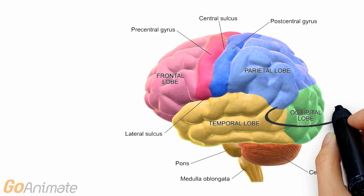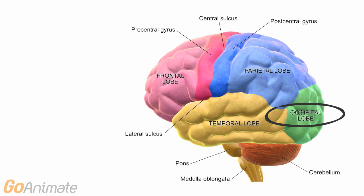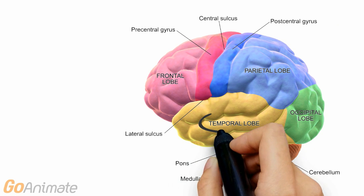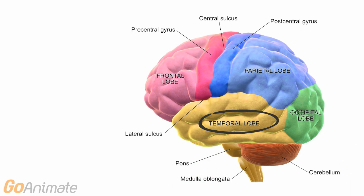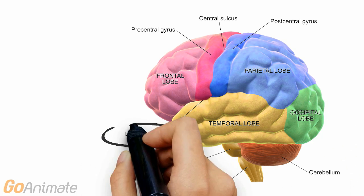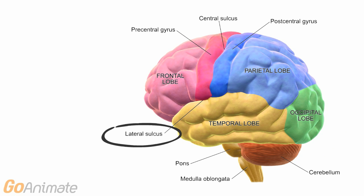The occipital lobe is in the back of the cerebrum and processes visual information. The temporal lobe processes auditory information. The lateral sulcus divides the temporal lobe from the other areas.